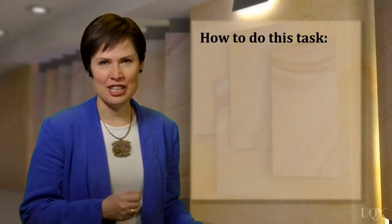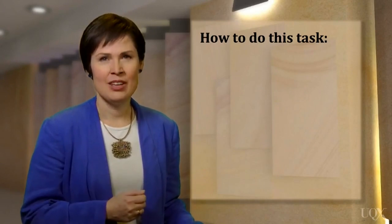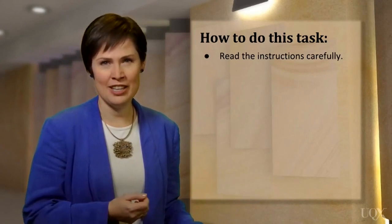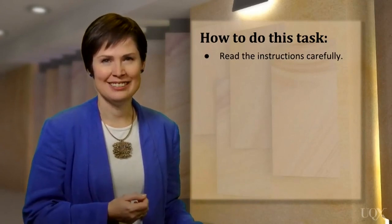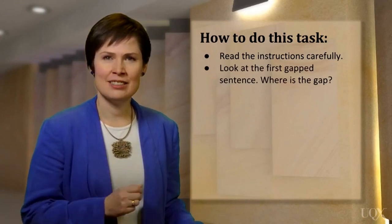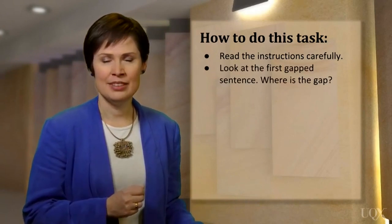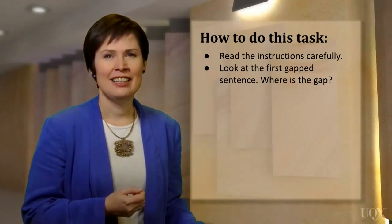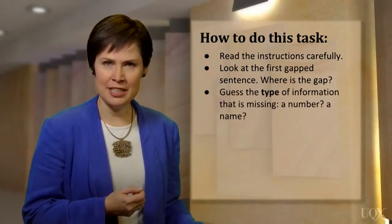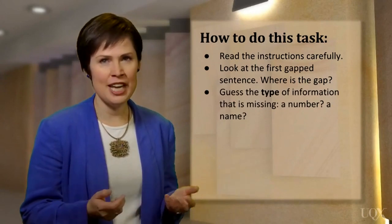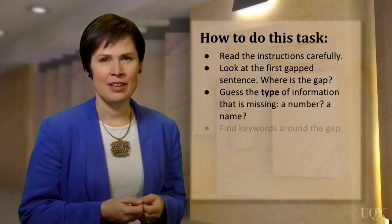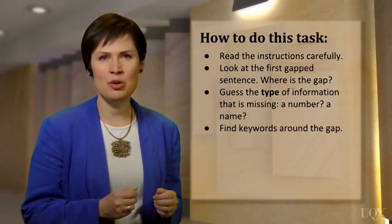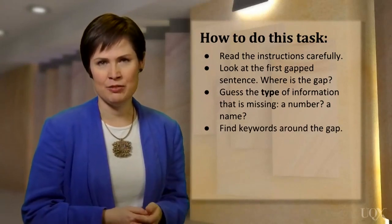You need to follow these steps. Read the instructions carefully to understand the word limit and where the answers need to be written. Look at the first gap sentence. Where is the gap? It may be in any position in the sentence. Guess the type of information that is missing. Is it a number or a name perhaps? Find keywords in the sentence around the gap which are important for finding the missing information from the text.